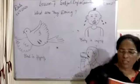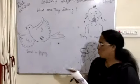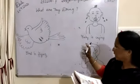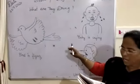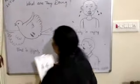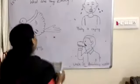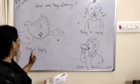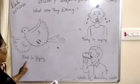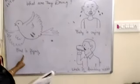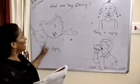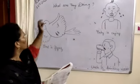The words that show what is happening are called action words or doing words. What is happening here? The bird is flying. Who is flying? The bird is flying. That is what is happening here — action words.